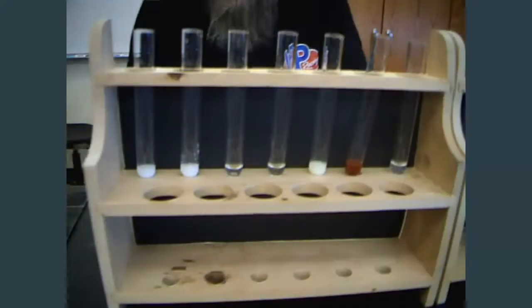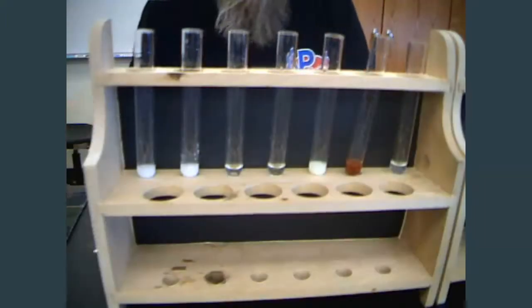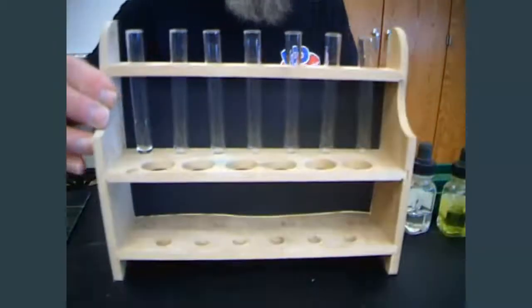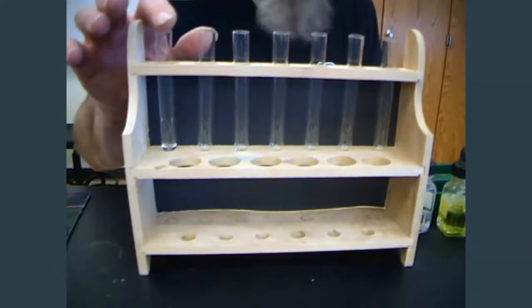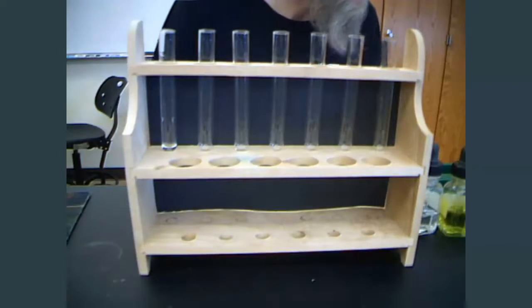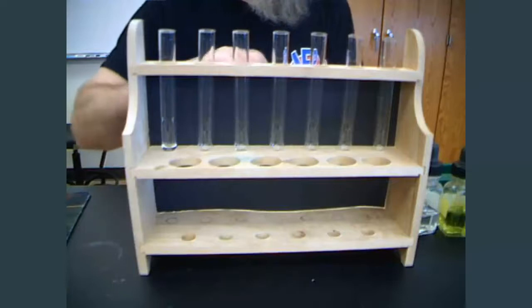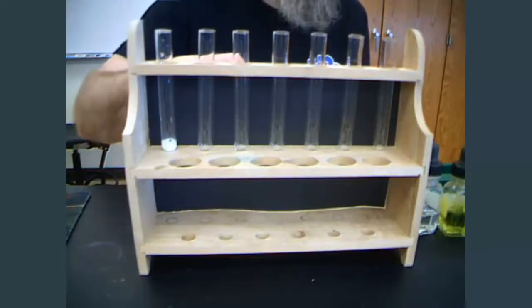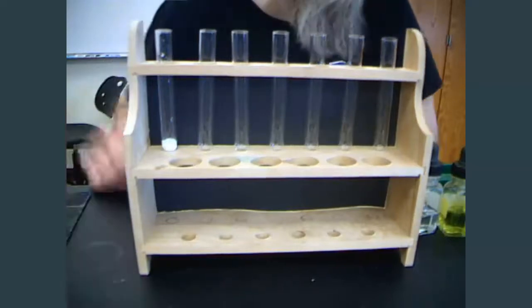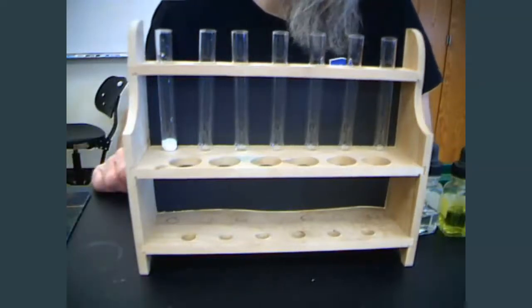If you're following along, you should have one through seven filled out. Number eight, silver nitrate and barium chloride. Let me move this test tube rack out of the way. Remember that I already put the silver nitrate into that first test tube there. This one involves barium chloride. And indeed, we have a reaction. We have a white precipitate form in test tube number eight.